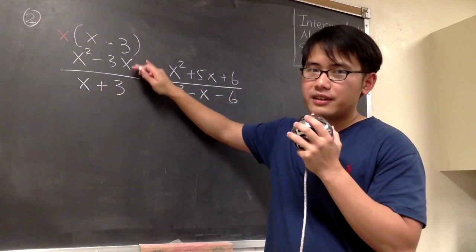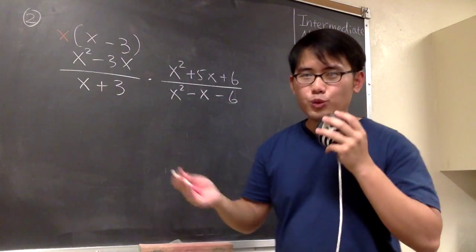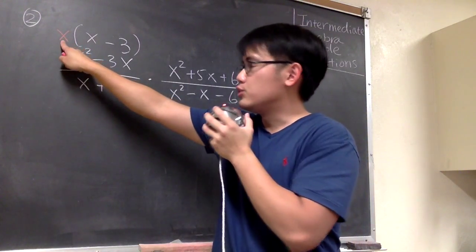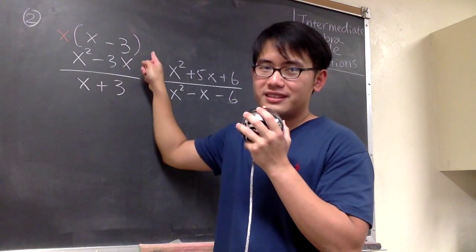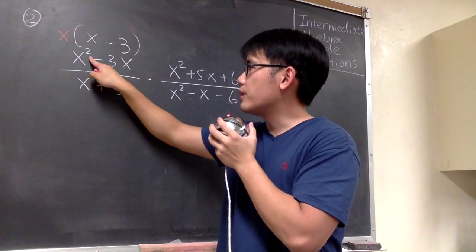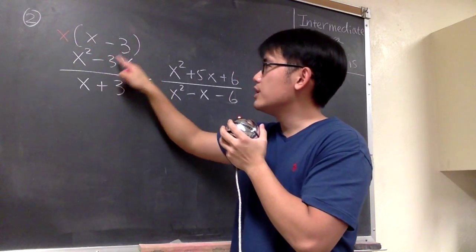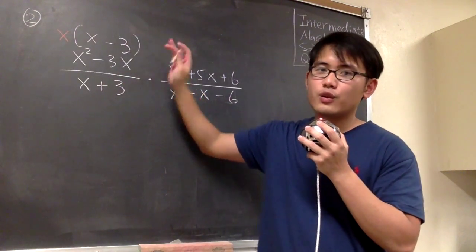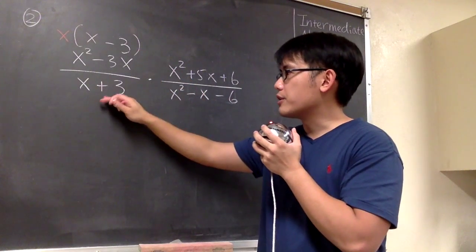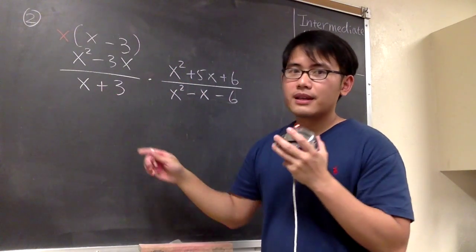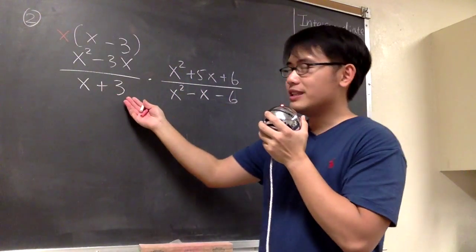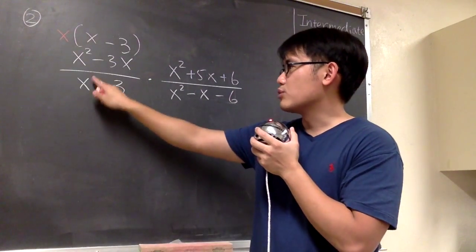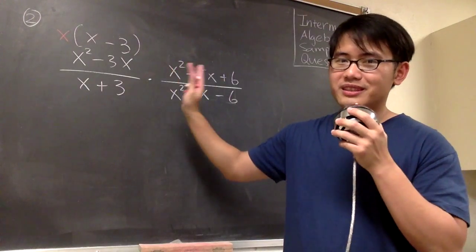I put the result of the factoring right above the numerator — I think it's more organized this way. We can do a quick check: if we distribute this x into the parentheses, x times x gives us x² and x times negative 3 gives us negative 3x, so we know this factoring was correct. Now we move to the denominator x + 3. We don't need to do anything with it because x and 3 have nothing in common, so this is done.